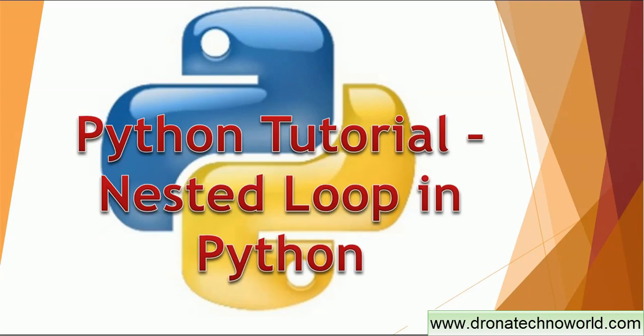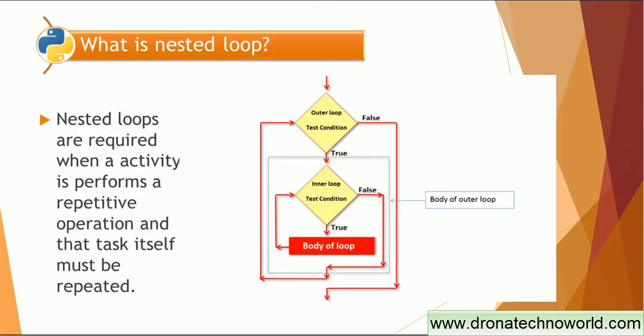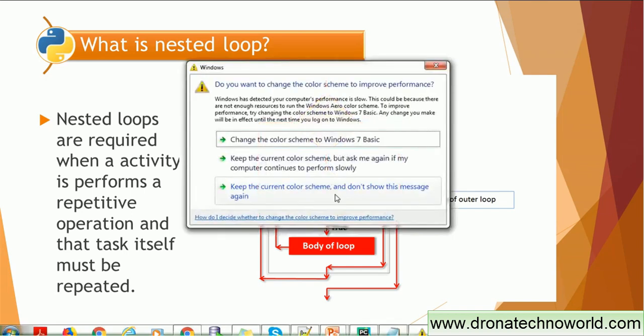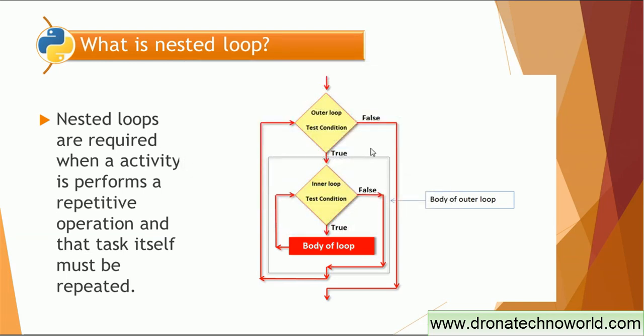Today we are going to see what a nested loop is and how to use it. Nested loops are required when an activity performs a repetitive operation, and that activity or task itself must be repeated several times. In such cases we need to use multiple loops — whether it's a while loop or a for loop — two or more times. That is called a nested loop.